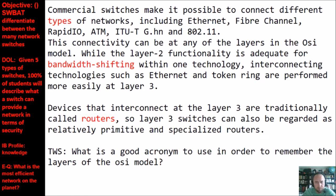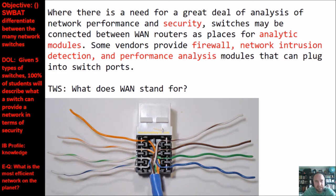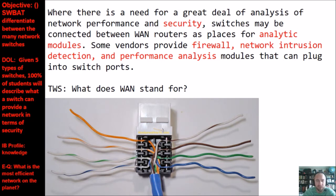Since I'm talking so much about the OSI model, I want you to recall a good acronym to remember its layers — my favorite is 'Please Do Not Teach Students Pointless Acronyms.' Where there's a need for analysis of network performance and security, switches may be connected to WAN routers as places for analytical modules. Some vendors provide firewall, network intrusion detection, and performance analysis modules that can plug into switch ports. We're moving from switches in LANs to switches in WANs — what does WAN stand for?